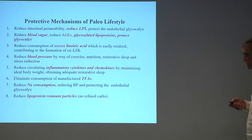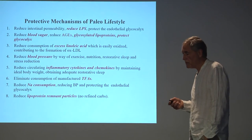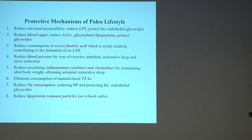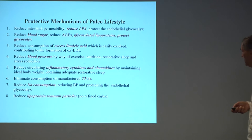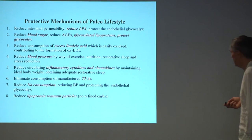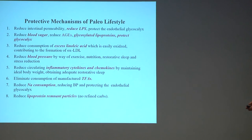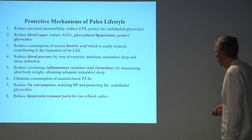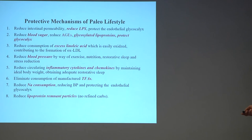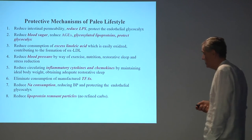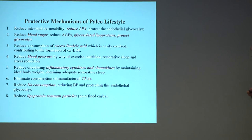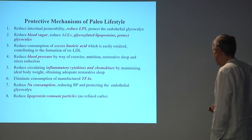How does a paleo lifestyle protect us from the formation of atherosclerotic plaque? We reduce intestinal permeability, reduce LPS absorption, and protect the endothelial glycocalyx from the deleterious effects of LPS. We reduce blood sugar, reduce AGEs and glycosylated lipoproteins, and protect the glycocalyx. We reduce consumption of excess linoleic acid, which is easily oxidized and contributes to oxidized LDL formation. We reduce blood pressure through exercise, nutrition, restorative sleep, and stress reduction. We reduce circulating inflammatory cytokines and chemokines.